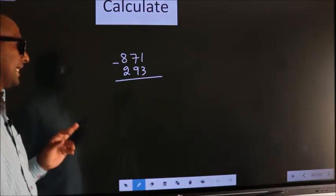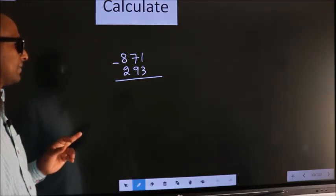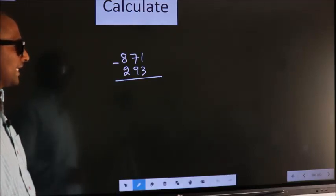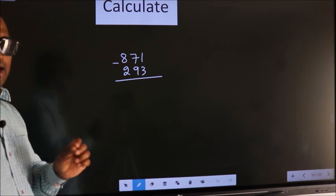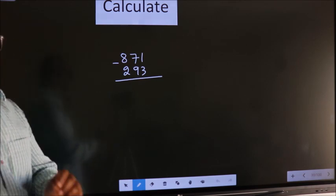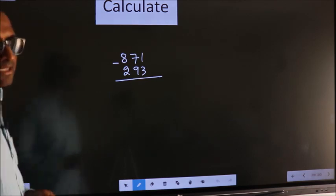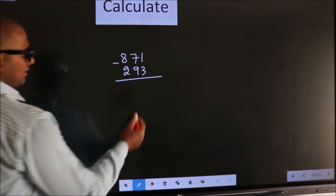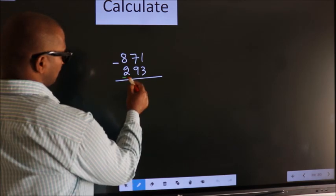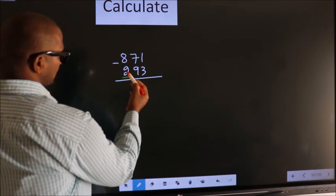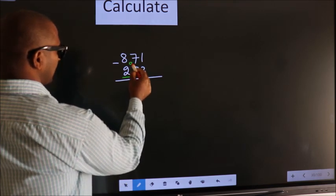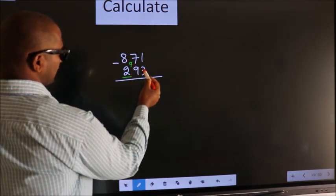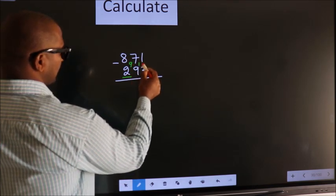Calculate 871 minus 293. How do we calculate this faster? You should leave the first digit. Here you write 9. Here you write 10.